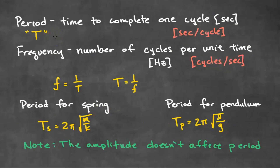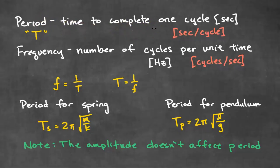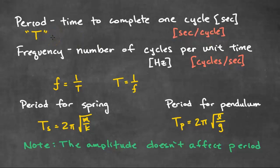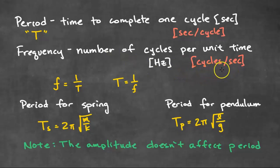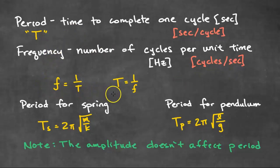Now we're going to take a look at some quantities we can measure about oscillations. A period is the time to complete one cycle — the unit is seconds, or seconds per cycle. The symbol for period is capital T. Frequency is the number of cycles per unit time, with units of hertz, or cycles per second. Period and frequency are inversely related: frequency equals 1 over the period, or period equals 1 over the frequency.